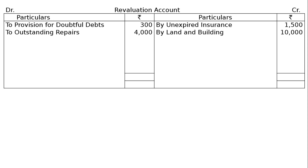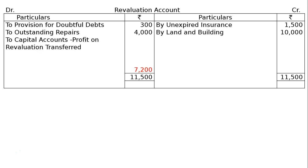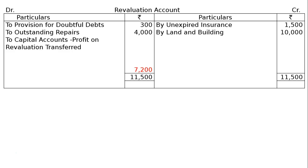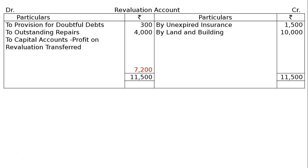Two entries completed. Credit side total is 11,500. Debit side is 4,300. Difference gives revaluation profit of 7,200, which is transferred to capital accounts.